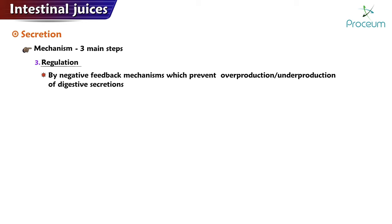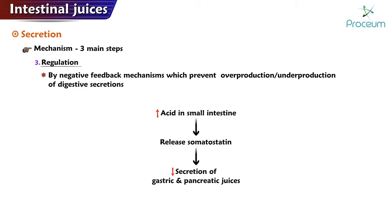Regulation: the secretion of intestinal juices is regulated by negative feedback mechanisms, which prevent the overproduction or underproduction of digestive secretions. For example, the presence of high levels of acid in the small intestine can stimulate the release of the hormone somatostatin, which decreases the secretion of gastric juice and pancreatic juice.